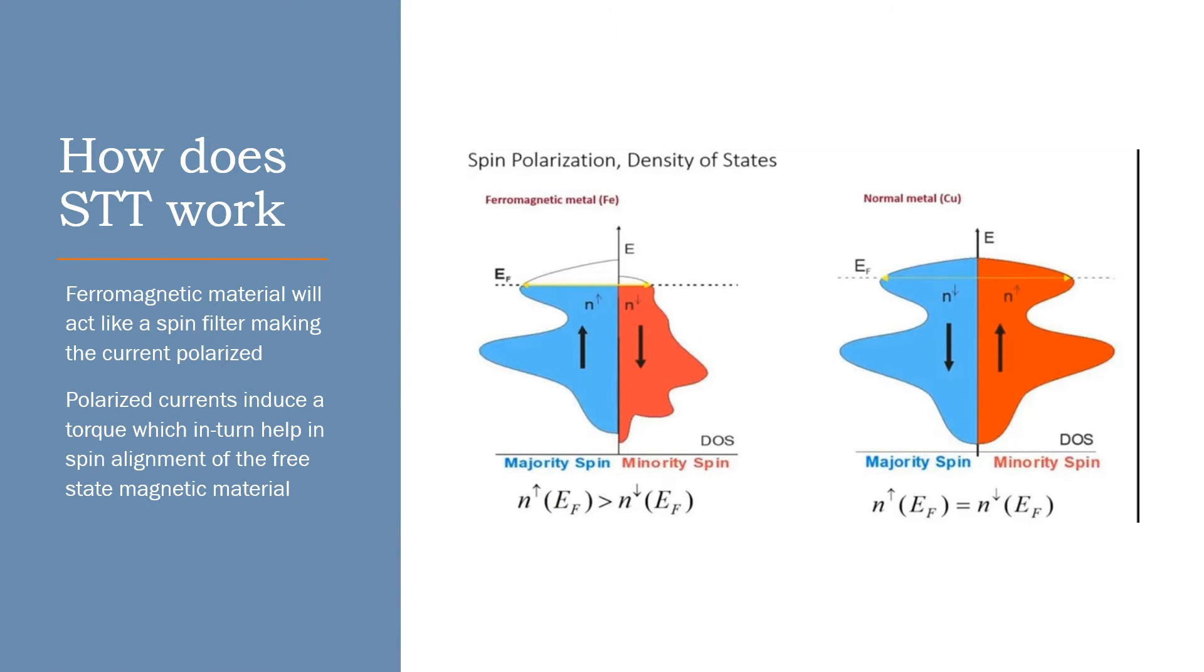For example, if I go for a ferromagnetic material, what will happen is the up spin or clockwise spin, electrons with clockwise spin, is more than that of electrons with anti-clockwise spin. So since the majority of them are clockwise, we assume the free state ferromagnetic material to be clockwise direction. So how does this help?